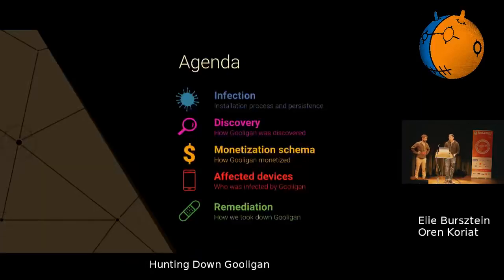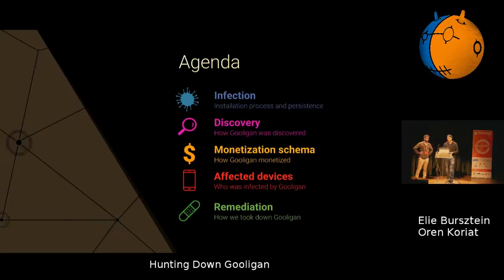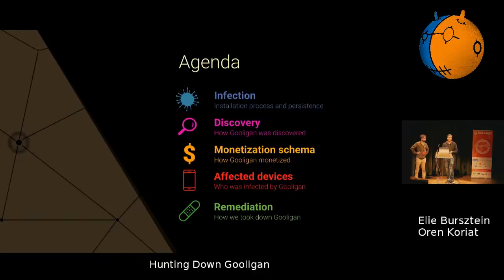Today we're going to cover five points. Oren is going to start by telling you about how the infection works and the mechanical details behind the infection, and recount how Checkpoint discovered the backend infrastructure behind Gooligan. Then I'll come back and tell you how they monetized — how they were using the malware to make money. We will talk about which devices were affected based on our telemetry, and finally, how we were able to take it down.